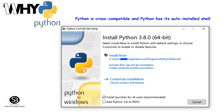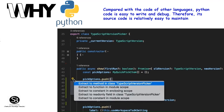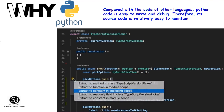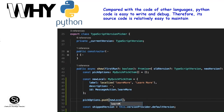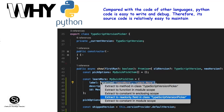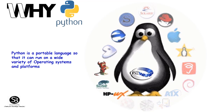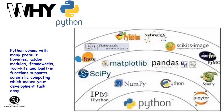Python is cross-compatible and auto-installed. The source code is easy to maintain. Python is a portable language — it can be used in a variety of operating systems and platforms. Python makes development tasks easy to do.